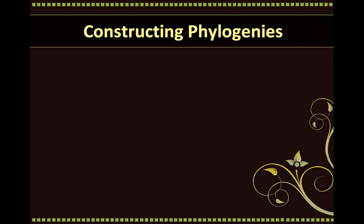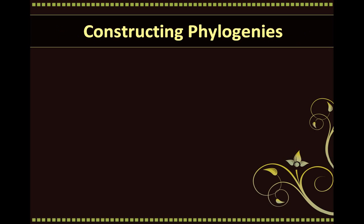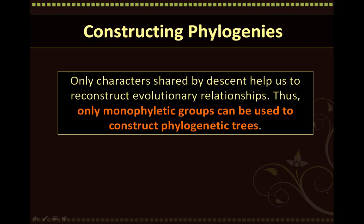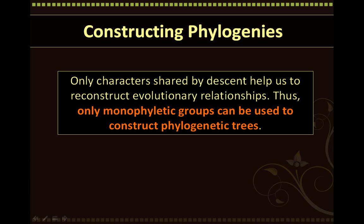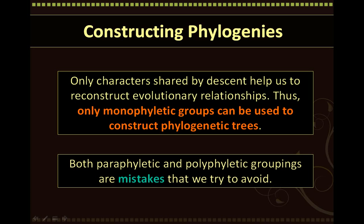Only characters that are shared by descent or common ancestry can help us to reconstruct evolutionary relationships, which is what we try to do when constructing phylogenies. Only monophyletic groups, or clades, are true representations of the evolutionary relationships in a phylogeny, and for this reason, only monophyletic groups can be used to construct phylogenetic trees. Both paraphyletic and polyphyletic groupings are mistakes that we try to avoid.